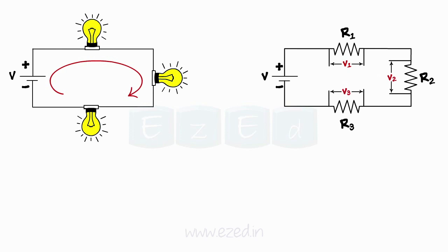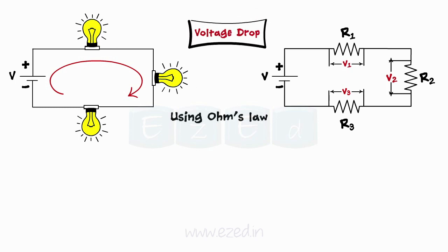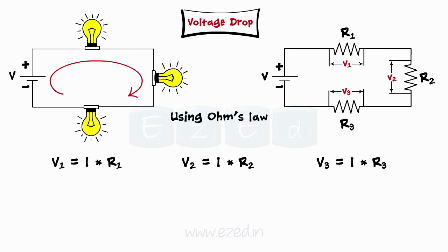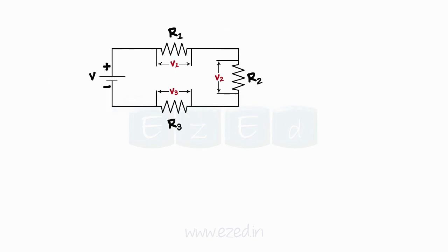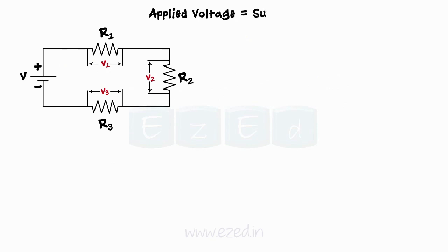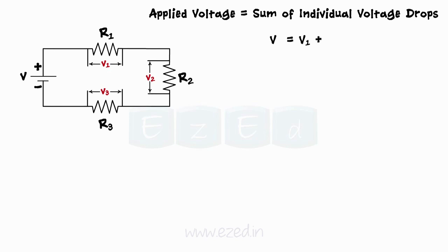For all three resistances, the voltage drops are calculated using Ohm's law as V1 = I × R1, V2 = I × R2, and V3 = I × R3. For any series circuit, the applied voltage is always equal to the sum of individual voltage drops. Thus, V = V1 + V2 + V3.